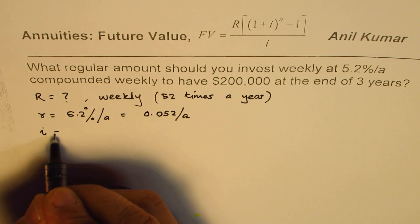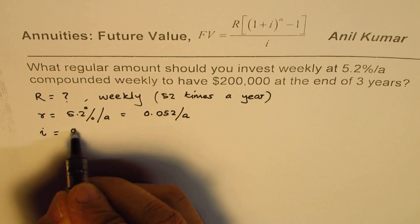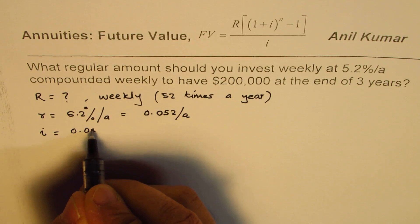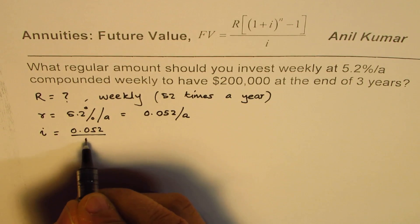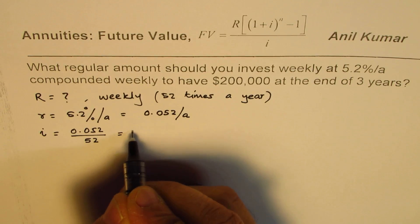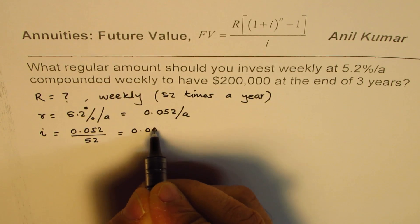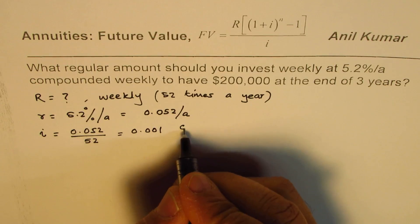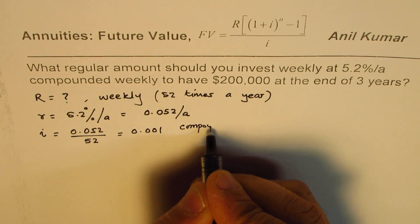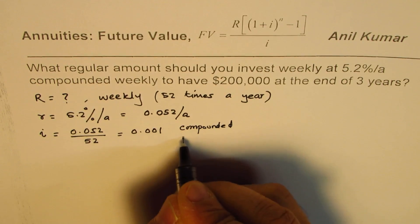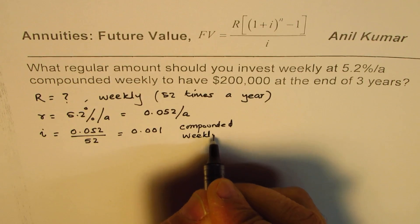That is the I value. So I is 0.052 divided by 52, which will be 0.001. So this is compounded weekly, correct?